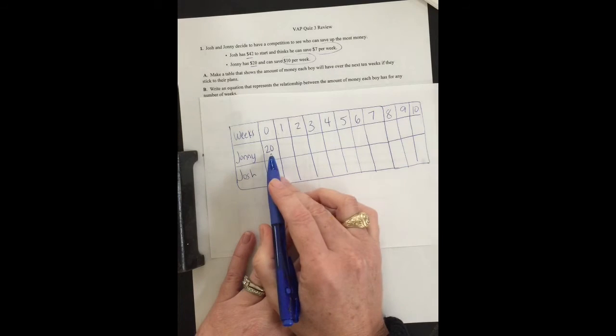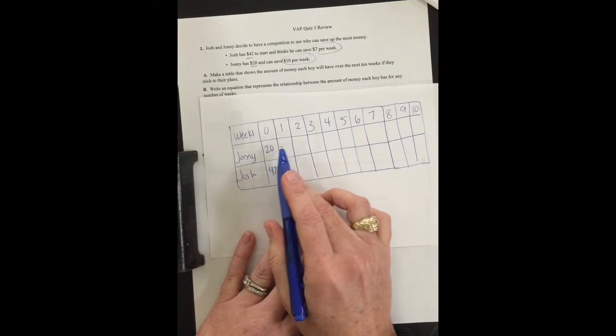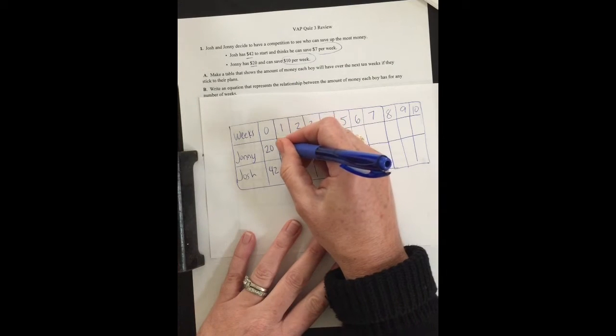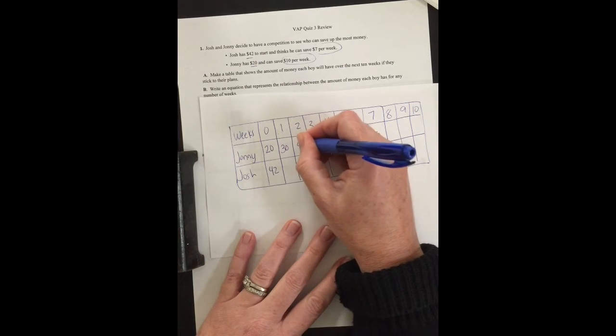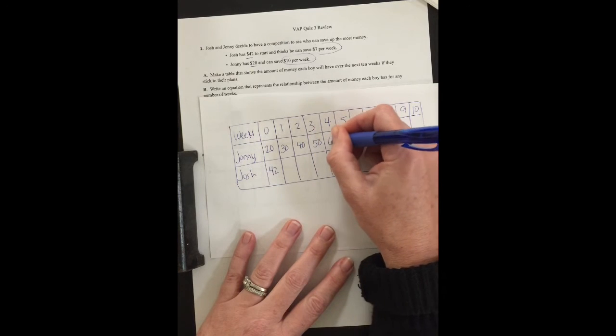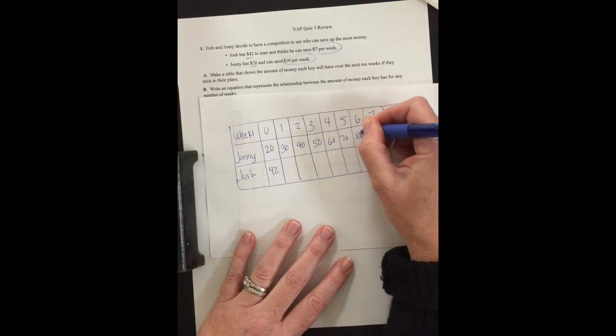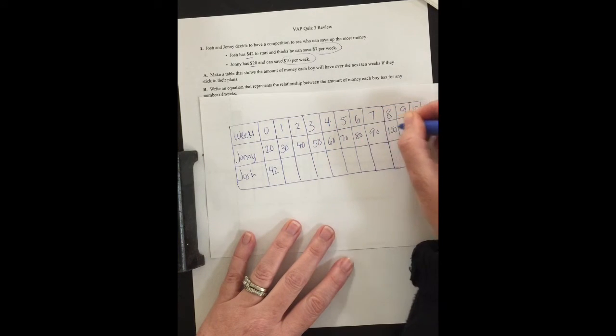It says that Johnny starts with $20 and he can save $10 per week. So at week one, after week one, he'll have $30. Then he'll have $40, 50, 60, 70, 80, 90, 100, 110, and $120.